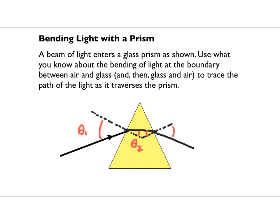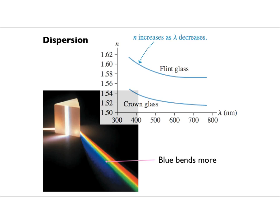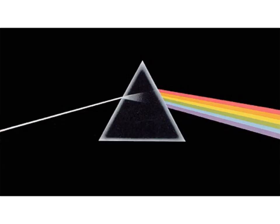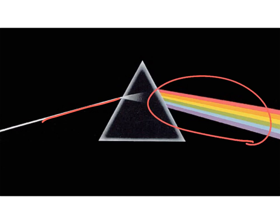Before we get to the iconic image, I'll introduce dispersion: the index of refraction varies with wavelength. Typically, n is larger for shorter wavelengths (blue) and smaller for longer wavelengths (red). So when light gets bent by a prism, blue light bends more than red light, and you get a rainbow — the colors are separated. The reason students are already familiar with drawing light through a prism is that everybody has seen the Pink Floyd album cover image. That's really how it works: rays come in, different colors bend by different amounts, with short wavelengths (blue) at the bottom bending more and long wavelengths (red) at the top.